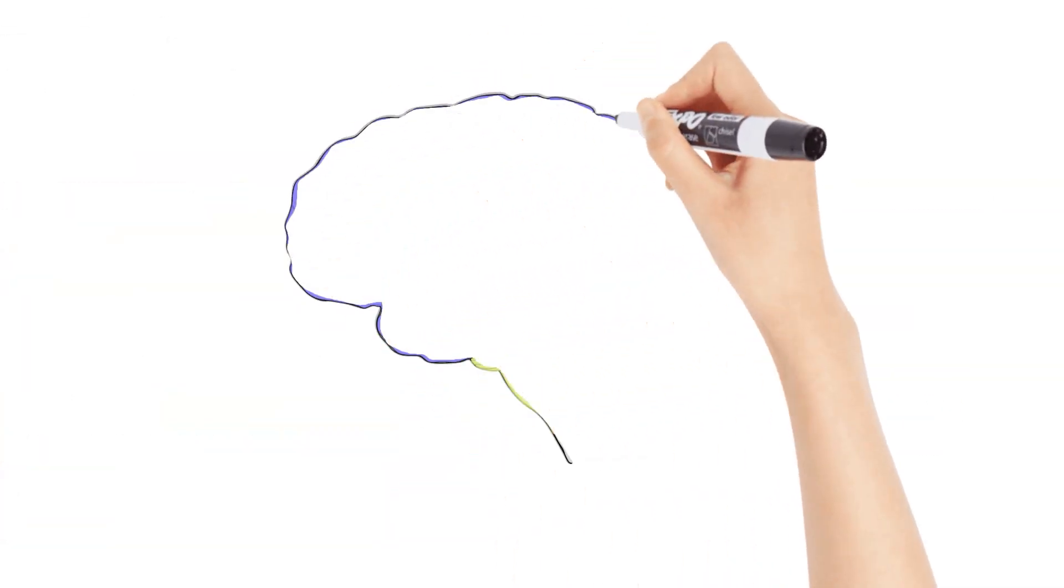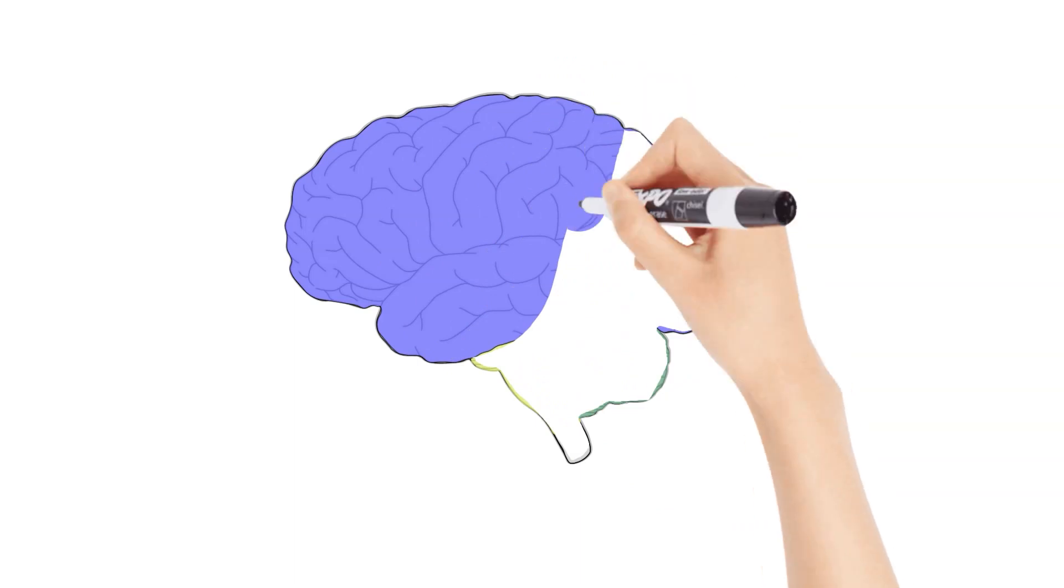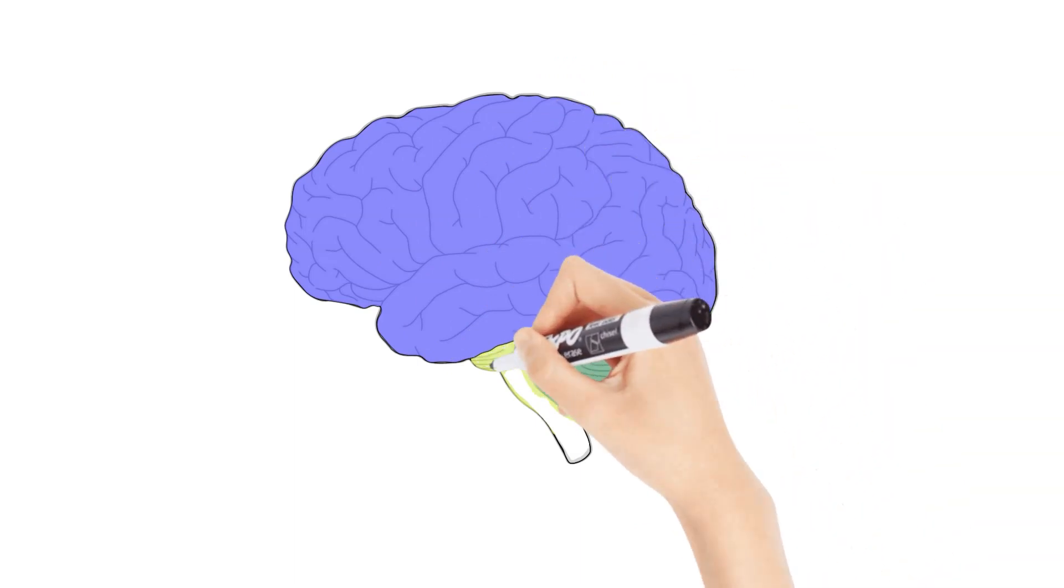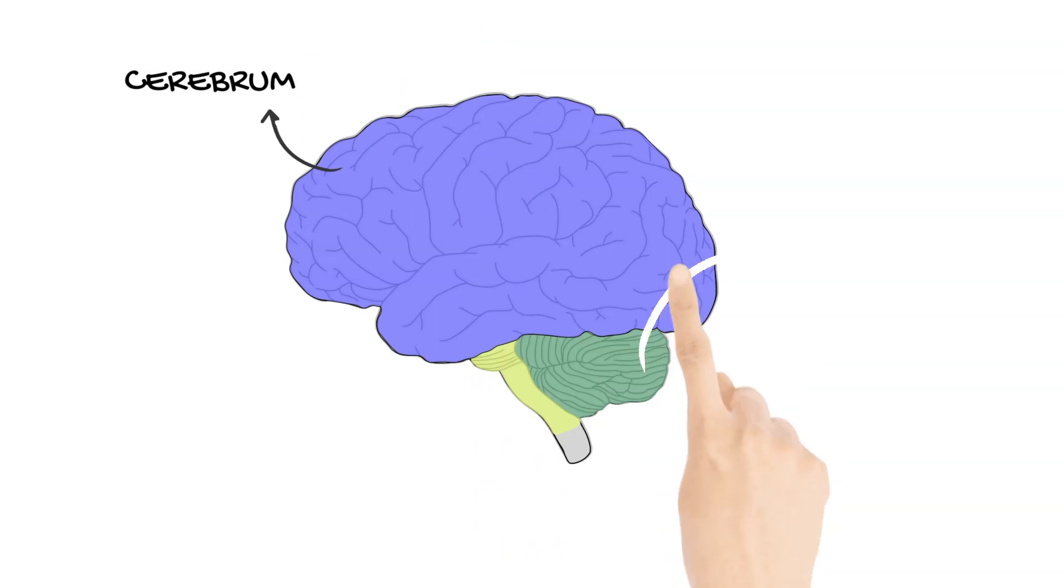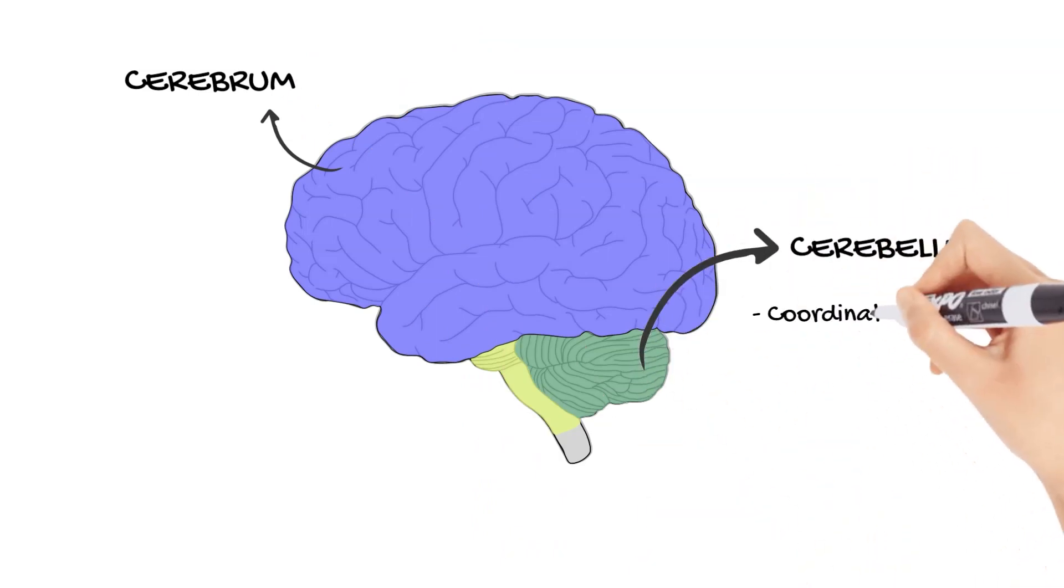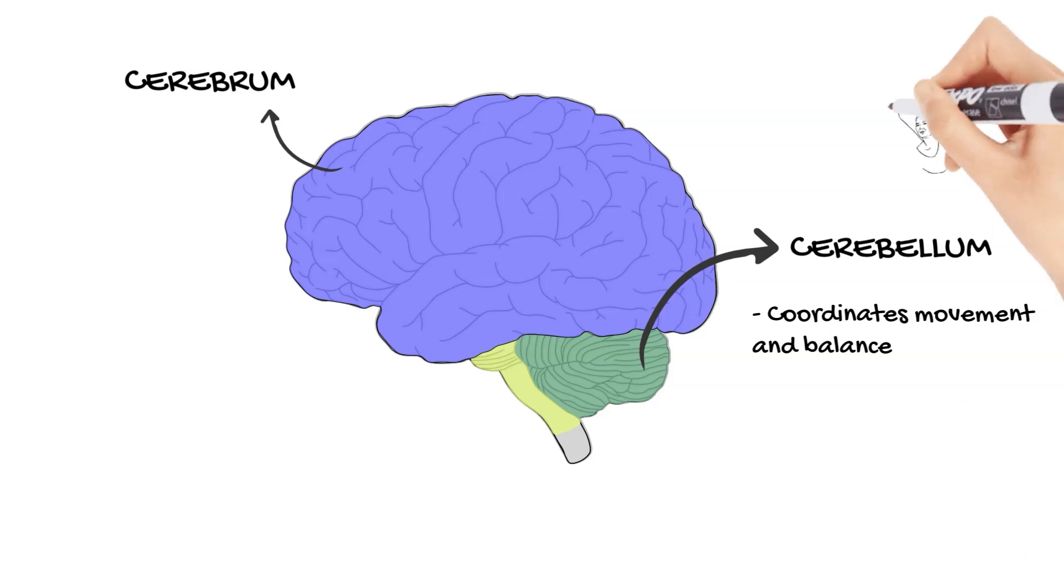Beneath the cerebrum lies the cerebellum, the brain's precision tool for coordinating movement and balance. This little brain ensures that every dance step is graceful, every pen stroke is precise, and our daily ballet of movements is performed flawlessly.